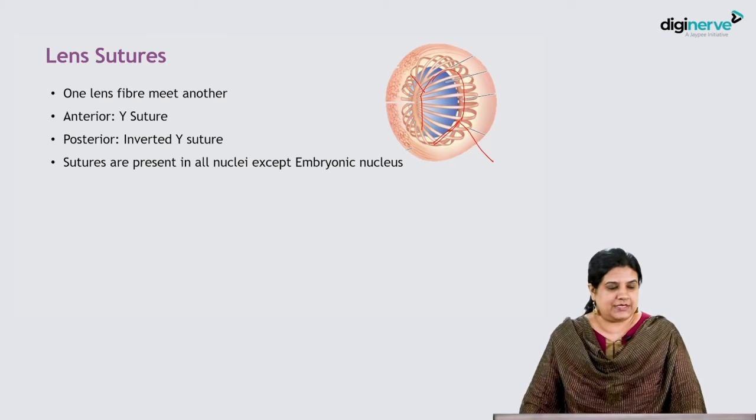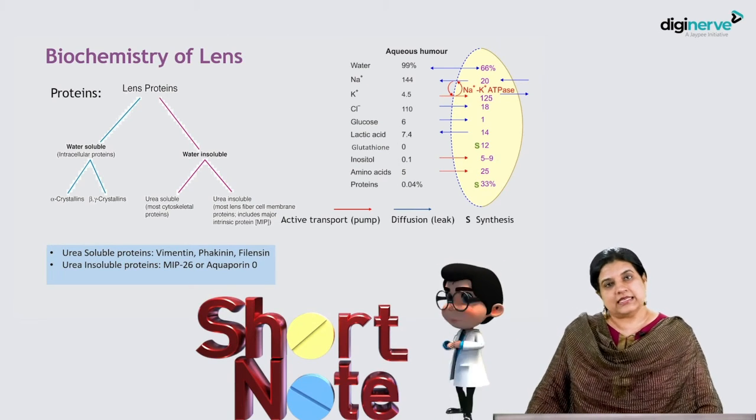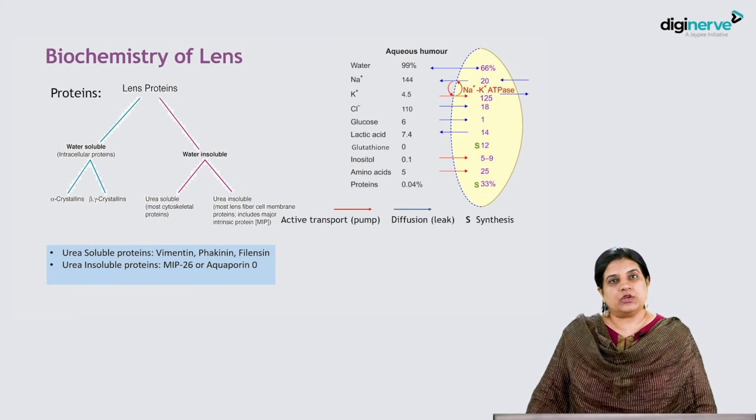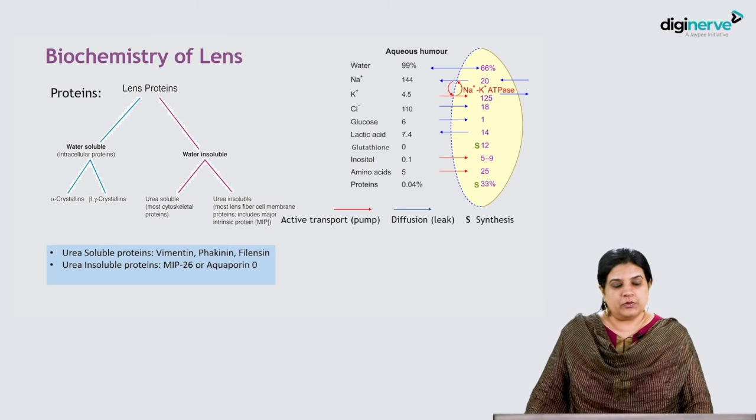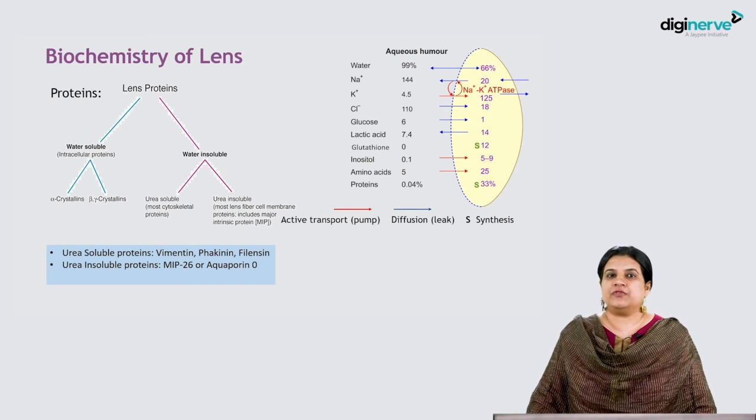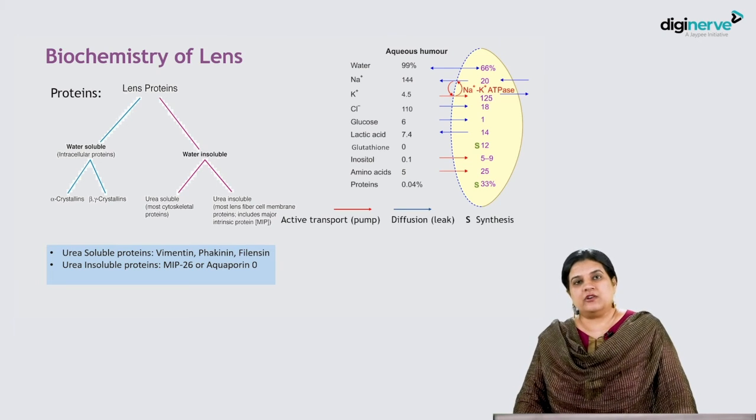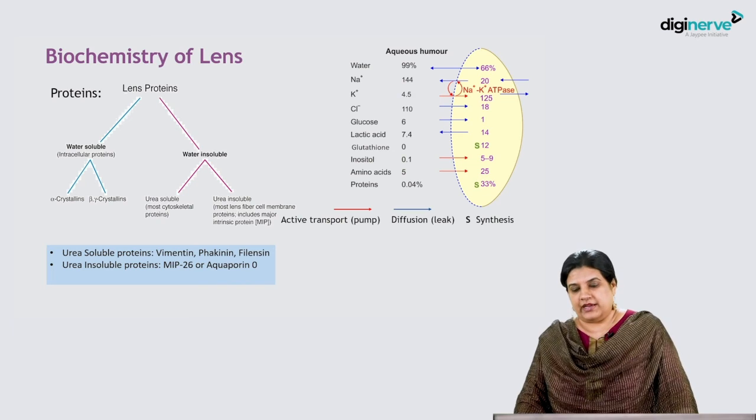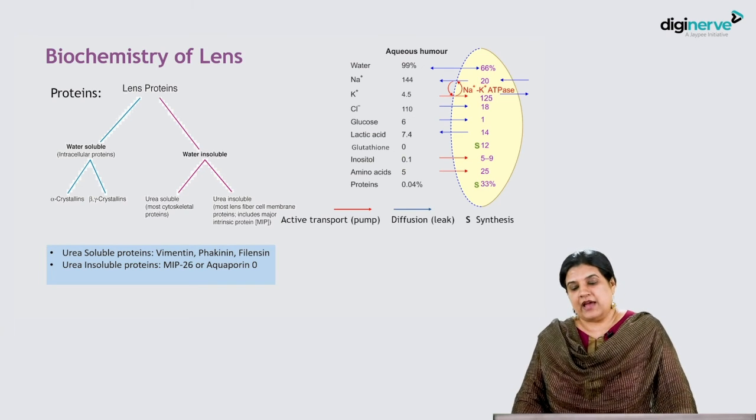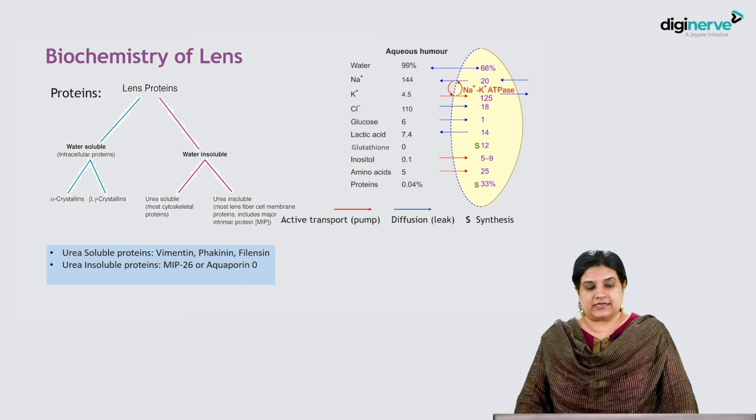Let's look at the biochemistry of the lens. The lens is 65% water and 30% proteins. Lens proteins can be water soluble or insoluble. Water soluble proteins include alpha, beta, and gamma crystallins. Beta crystallins form about 50-55% of lens proteins. Alpha crystallins are heat shock proteins and the largest crystalline proteins. They stabilize protein misfolding and prevent denaturation. Gamma crystallins are least in number and smallest in size.